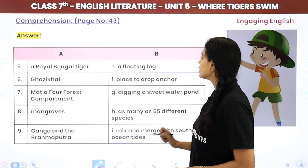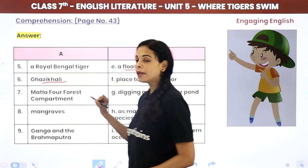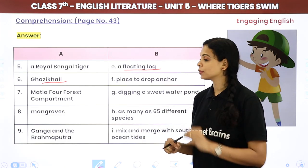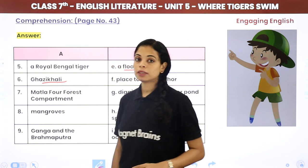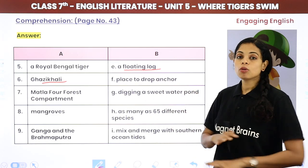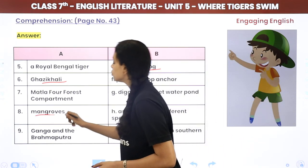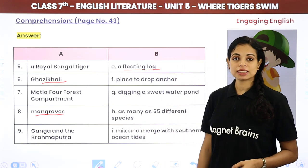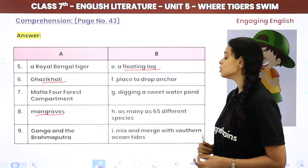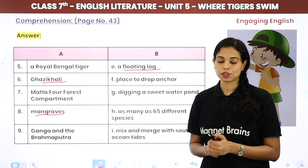Royal Bengal Tiger — floating log. Gazi Khali — the place to drop anchor. River — Matla. Forest compartment — there were people who were digging a sweet water pond. Mangroves — 65 different species in Sundarbans. Ganga and Brahmaputra — these two rivers mix and merge with southern ocean tides. If you have read the chapter, this is going to be a piece of cake for you.